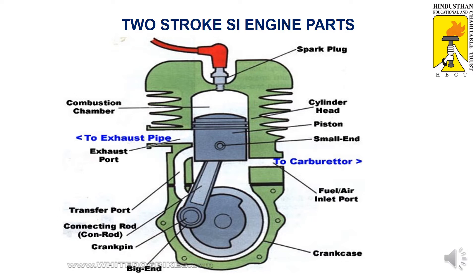The first one is the head block. The head block consists of the spark plug. The second one is the cylinder block. It consists of a piston and cylinder — it is called the combustion chamber. It also has an exhaust port and an inlet port. The inlet port connects from the carburetor.